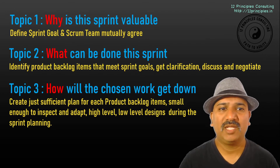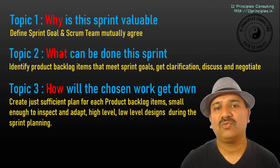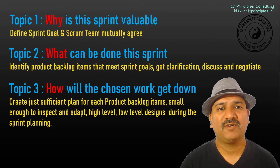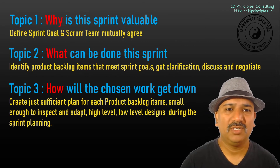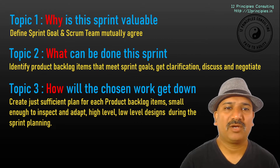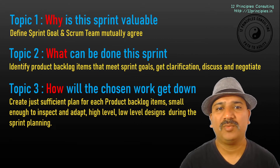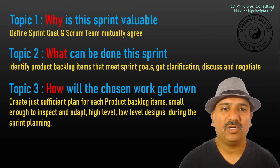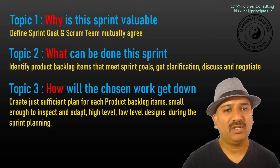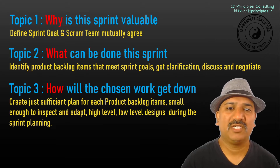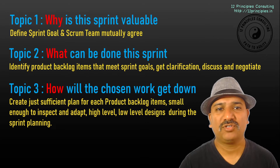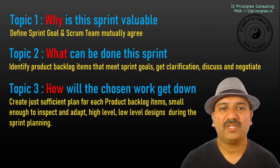In topic three, the team members talk about how will the chosen work get done. In topic two, the team members have picked up a couple of Product Backlog items. In topic three, they talk about how those Product Backlog items will be completed. They create just a sufficient plan for each item — small enough to inspect and adapt — covering high-level designs, low-level designs, collaboration, and definition of done required towards achieving the goals.